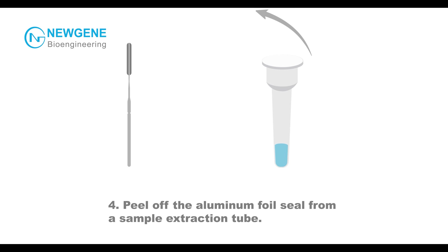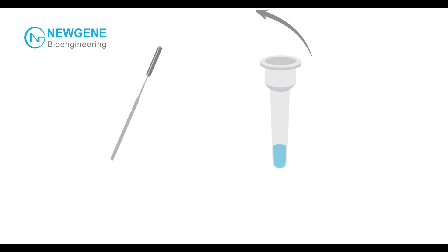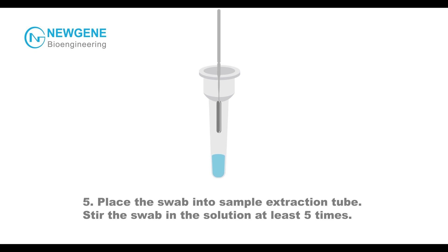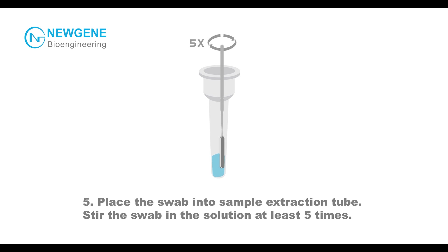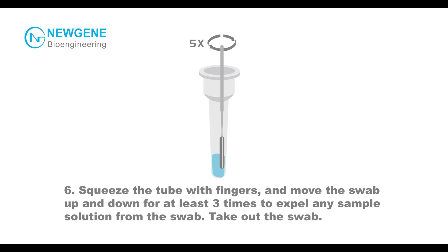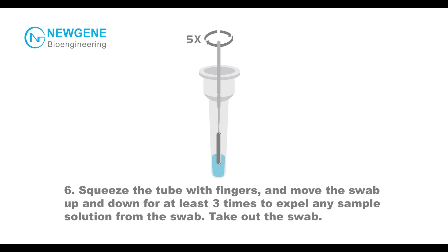Step 4: Peel off the aluminum foil seal from a sample extraction tube. Step 5: Place the swab into the sample extraction tube. Stir the swab in the solution at least 5 times. Step 6: Squeeze the tube with fingers and move the swab up and down at least 3 times to expel any sample solution from the swab. Take out the swab.